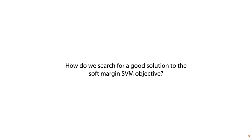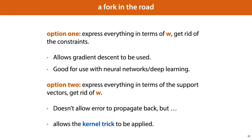Our next question is how to search for a good solution to the soft margin SVM objective. We have two options. One is to express everything in terms of the hyperplane parameters, which allows us to get rid of the constraints and use gradient descent on an unconstrained problem — this is good for combining with neural networks and deep learning, as we can use this as the top layer of a neural network. The second option delves into constrained optimization, which doesn't allow the SVM to be used as the top layer of a neural network, but opens the door to the kernel trick.